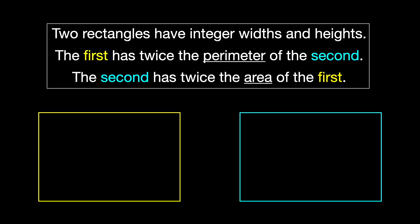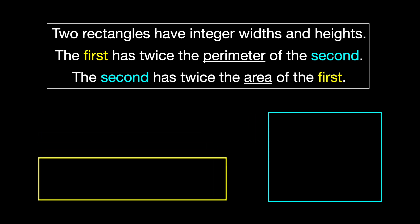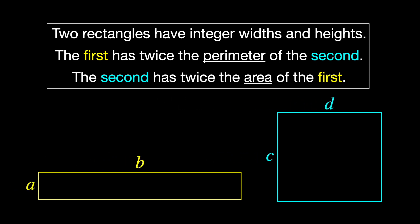If there are any such rectangles, the first one must have one short side and one long side, so that it has a lot of perimeter but encloses a small area. And the other will be closer to a square, so that it encloses more area with less perimeter. So let's label these four sides A, B, C, and D.